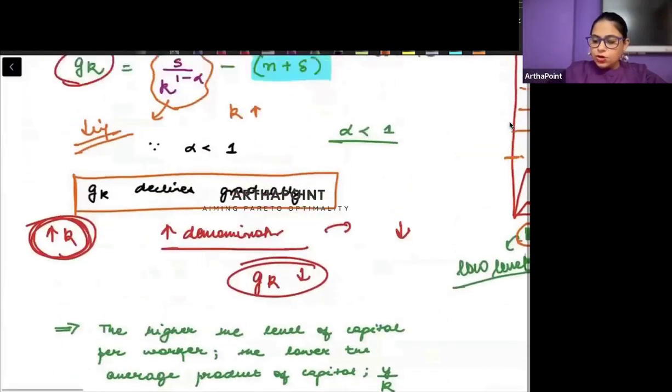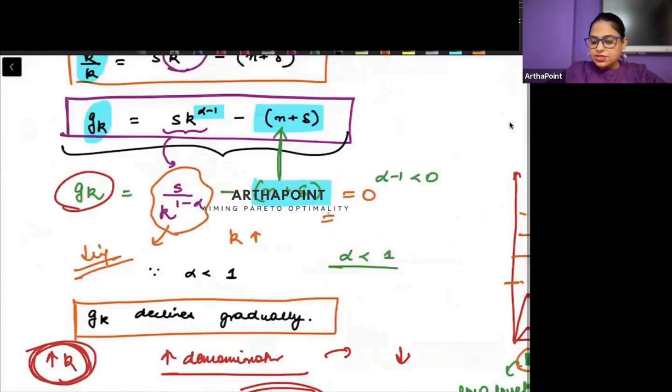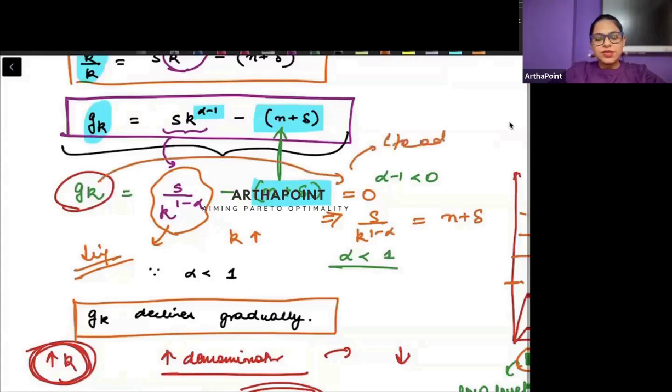Where this becomes equal to zero, that means this s upon k to the power 1 minus alpha is exactly equal to n plus delta. That means growth rate of capital is zero. That is steady state.